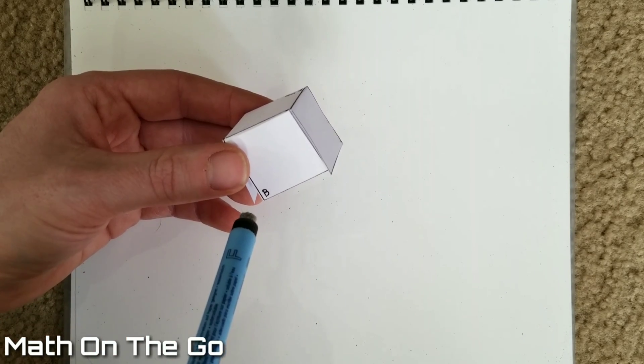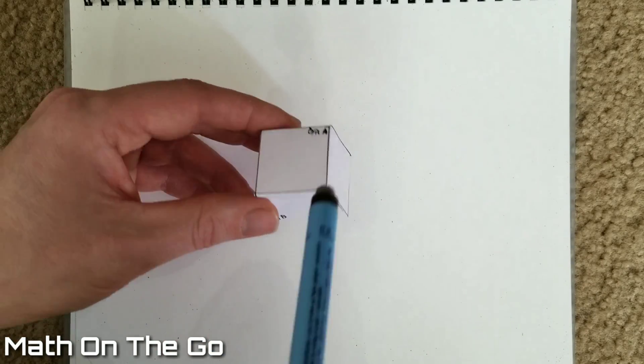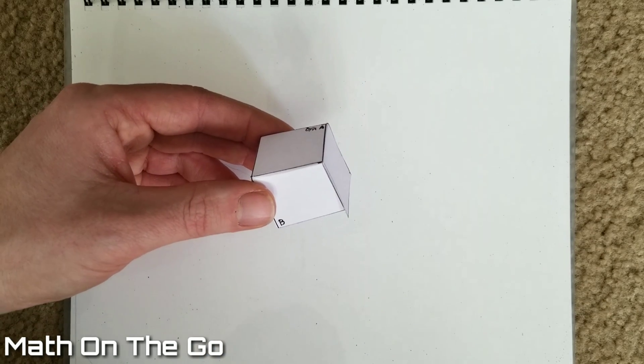Similarly, if it went this way, this way, and this way, or this way, this way, and then this way, it is also nine centimeters.